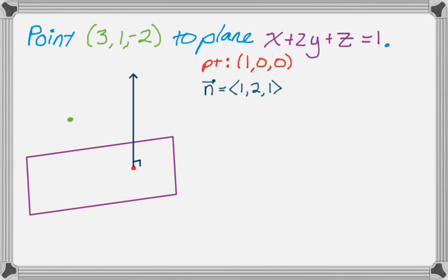And the next thing I'm going to do is I'm going to actually make a vector from the point that I just made to the point that I was given. So this vector right here. So that's going to be terminal minus initial. So I'm going to call it v. So v is 3 minus 1 comma 1 minus 0 comma negative 2 minus 0, or 2, 1, negative 2.